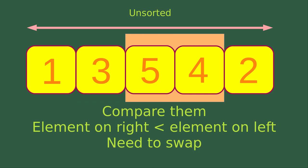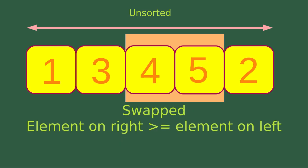Then I move my window to the next two adjacent elements and compare the values. Now the element on the right-hand side of the moving window is smaller than the element on the left-hand side, so I need to swap the two numbers. The two numbers are swapped so that the element on the right-hand side is larger than the left-hand side of the moving window.